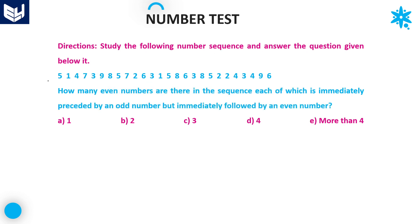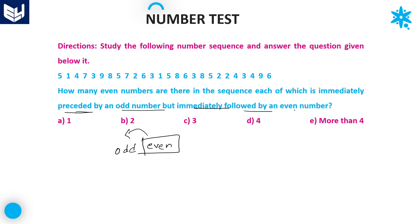Next question. The same series is given, and based on this he may ask sometimes 4 or 5 questions. The question asks: how many even numbers are there in the sequence, each of which is immediately preceded by an odd number but immediately followed by an even number? Preceded means before. We need to find even numbers where the condition is: even number preceded by odd and followed by even.